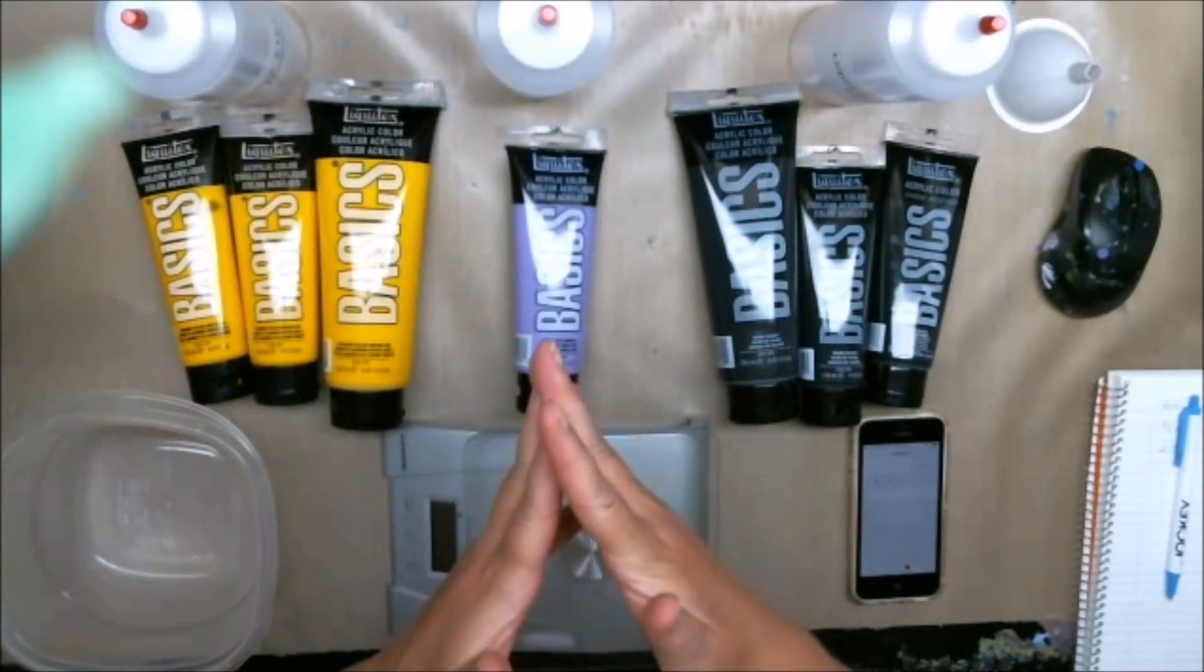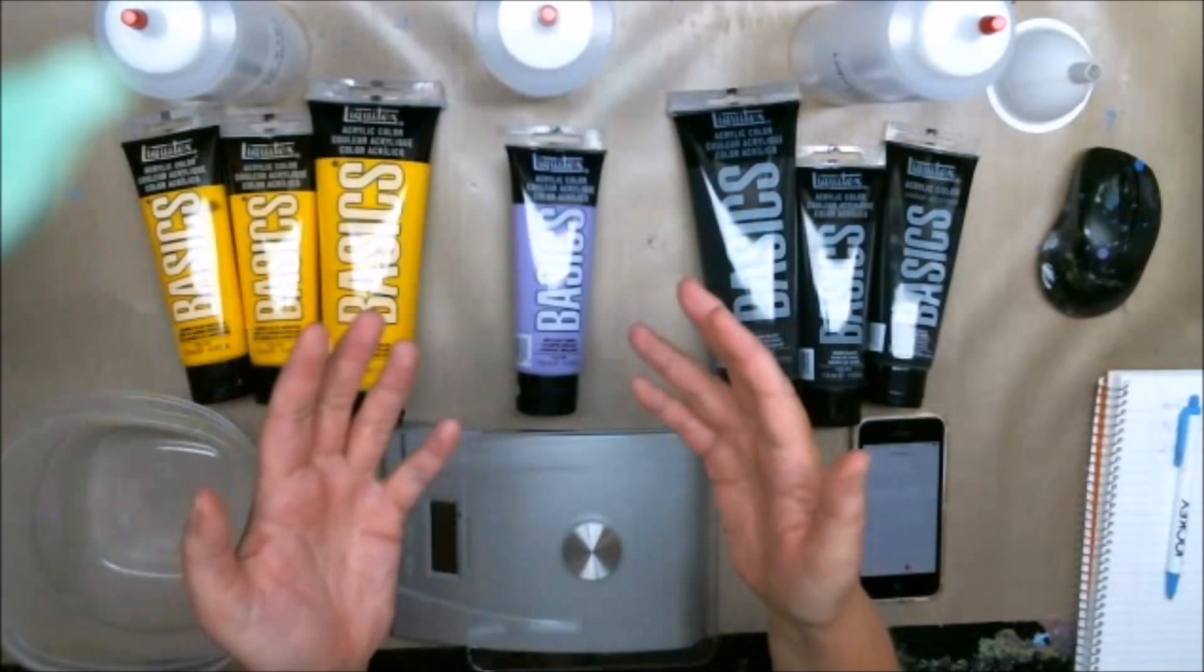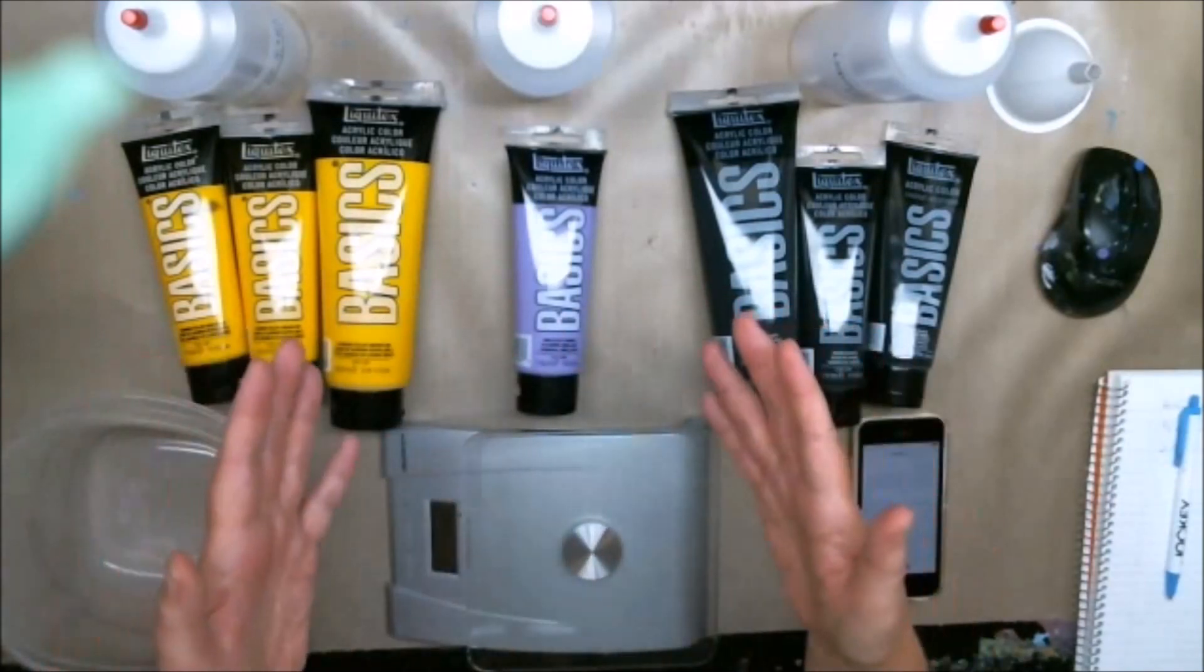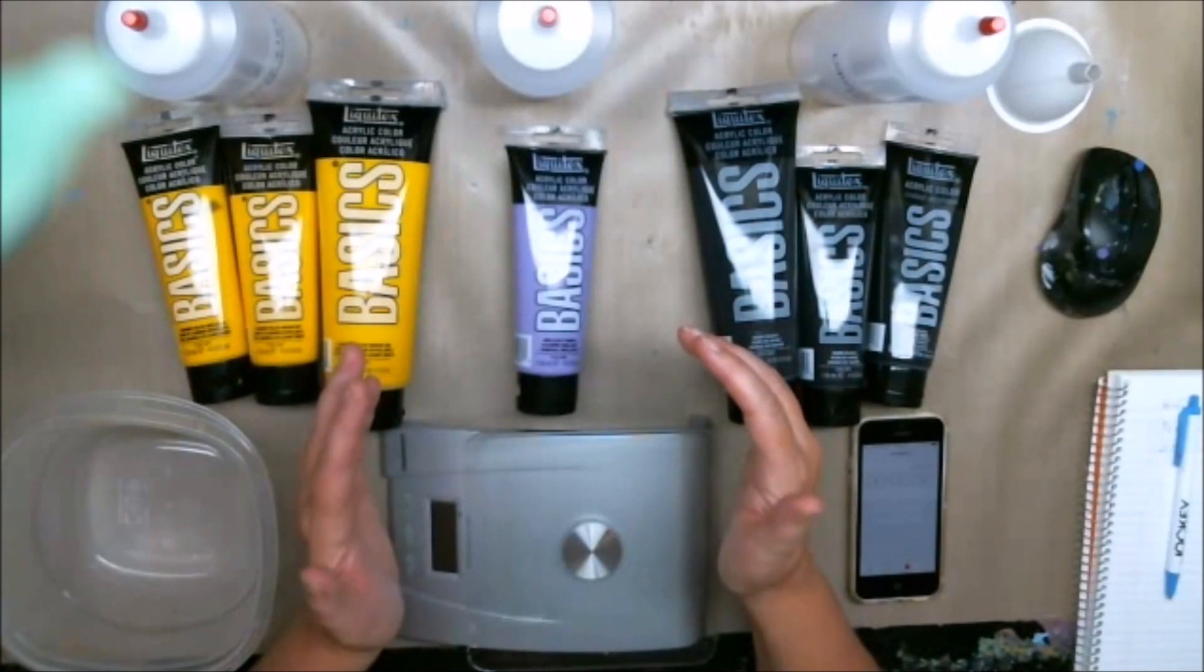Instead of the thinner one combining and mixing with the thicker one, because then you get color merge and I don't want that. I want the colors to move, so I'm going to show you how to make the paint and how to measure the viscosity.